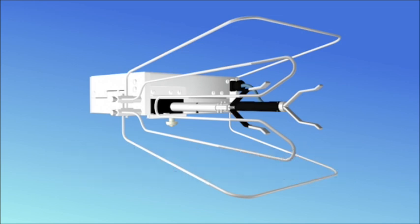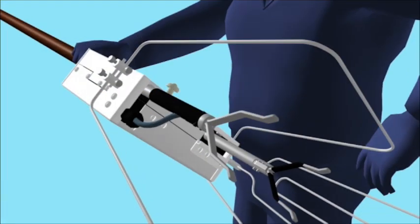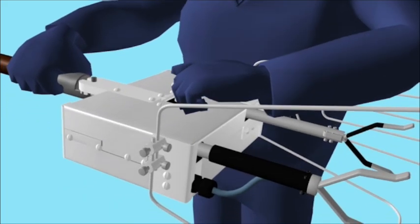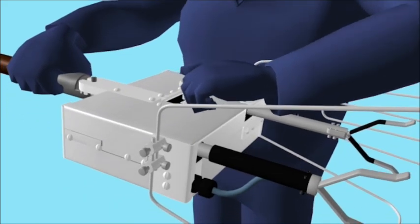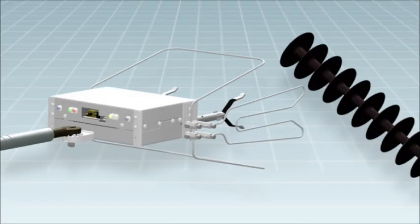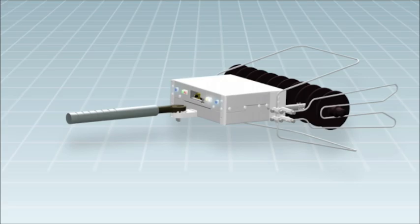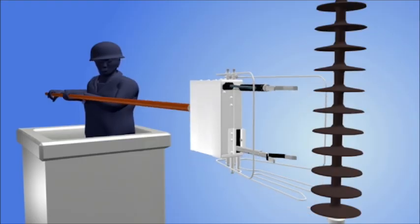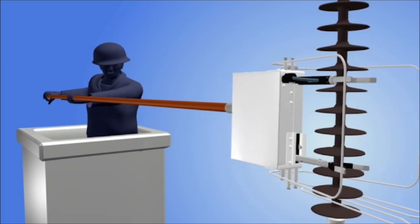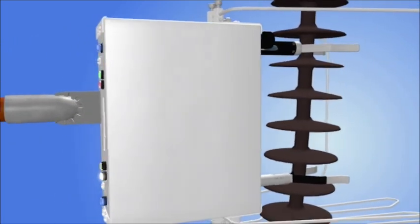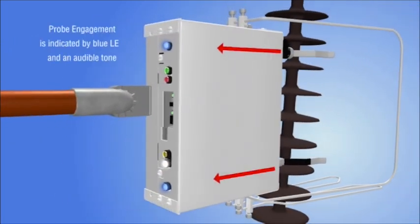To assess the condition of a section of insulator, choose a probe spacing that will allow the V-probes to make contact with the sheath of the insulator and not interfere with the sheds. Calibrate the unit as discussed in a later section. The unit is pushed using a hot stick so that the V-probes engage the sheath section of the insulator being assessed.